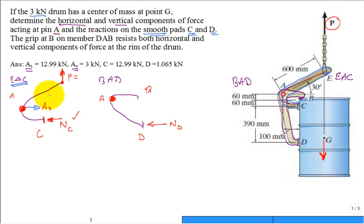And then likewise, what about Ay? Would Ay be up or down on member EAC? Down. Yeah, it would. And so this would be, I'm going to call this Ay downward.